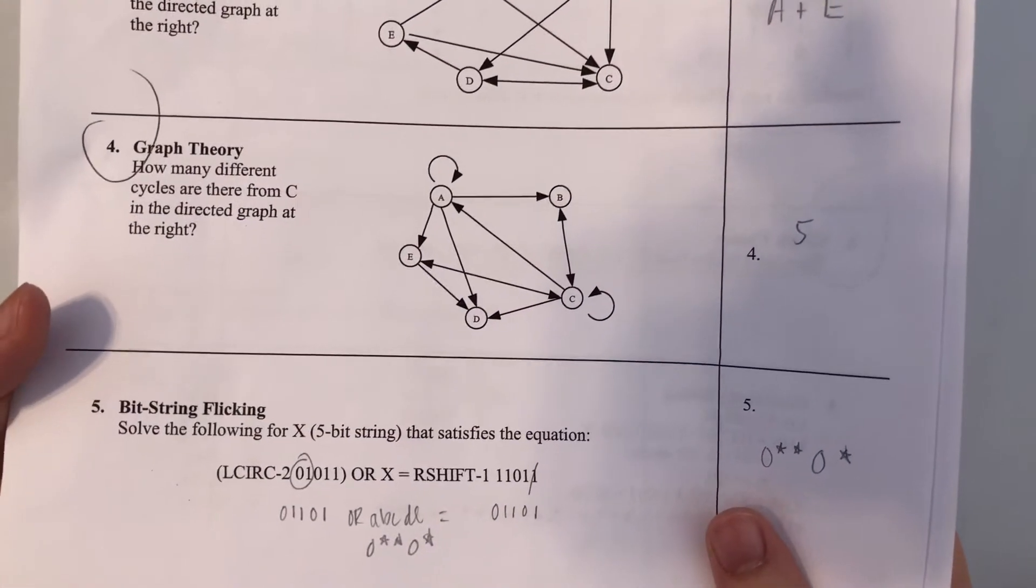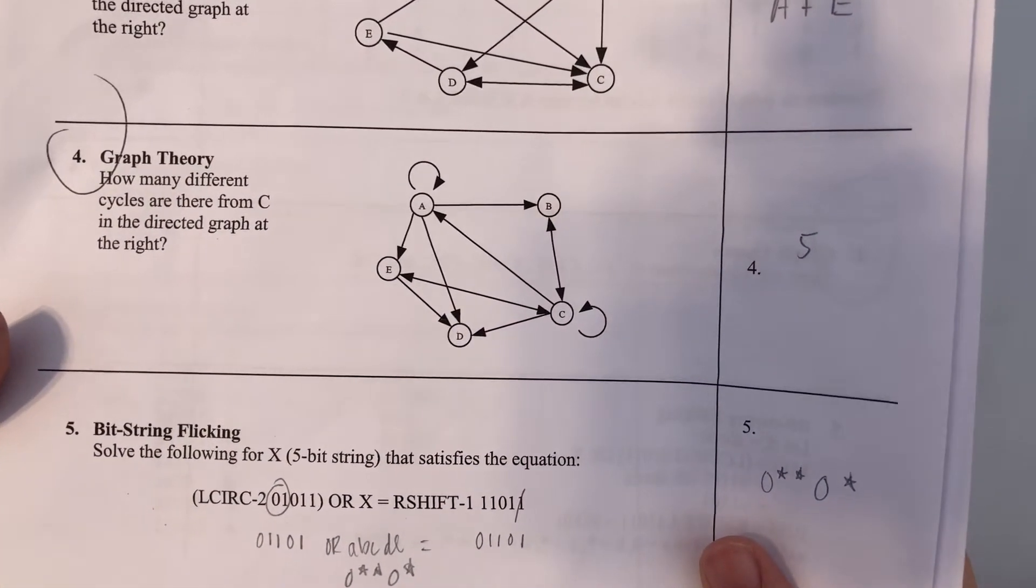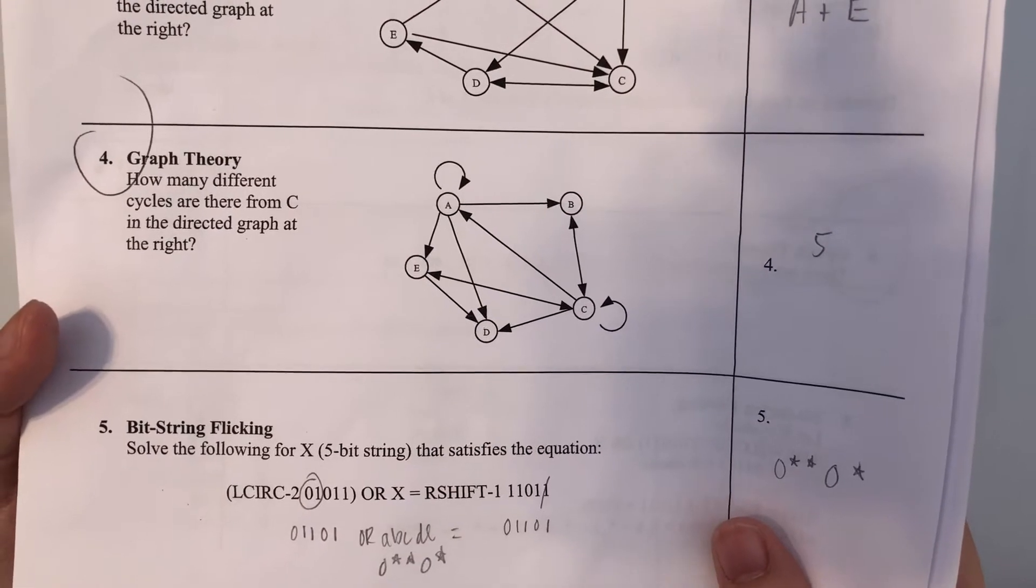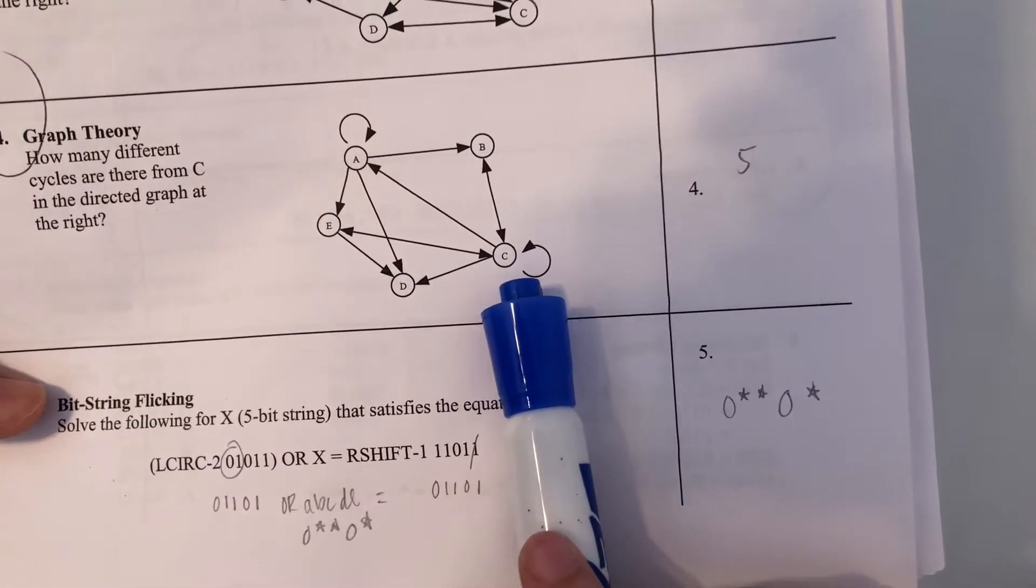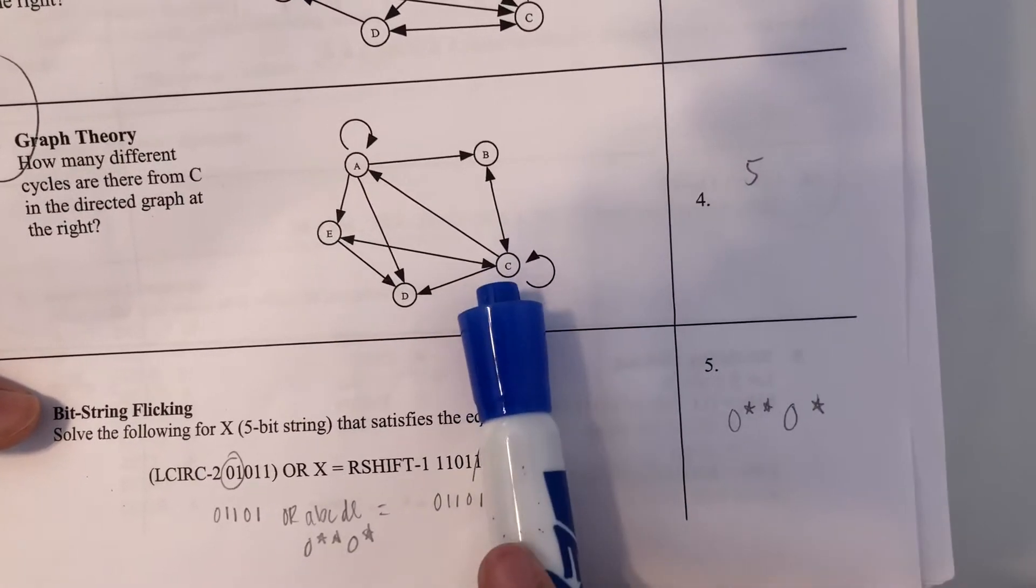So this question is asking us how many different cycles are there from C in the directed graph at the right. Basically that means we're going to start from vertex C and see how many paths we can take to get back to C.